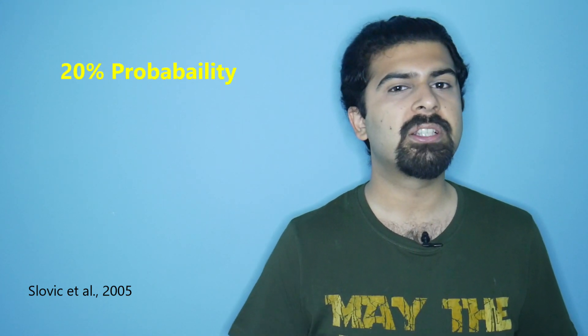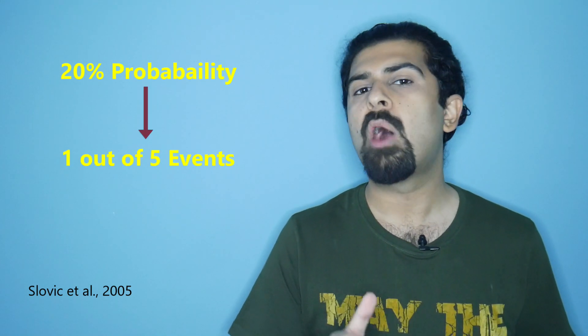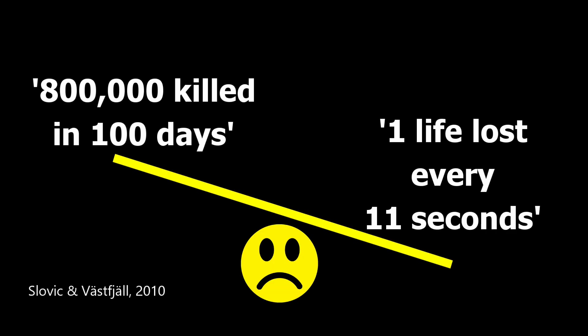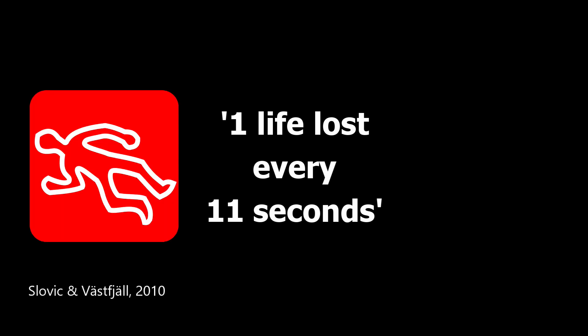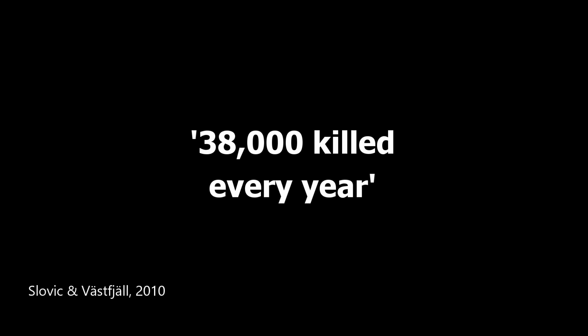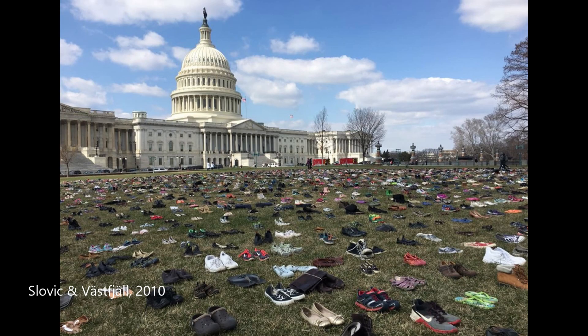Secondly, for quantitative information, frequency formats are more effect-laden than percentages. For example, to increase the effective meaning of 20% chance of death, it can be reframed as 1 out of 5 people are likely to die. Now, effective impact can be increased further by using imagery or individualized narrative. For example, 800,000 killed in the last 100 days can be broken down and reframed as one life lost every 11 seconds. Both the one life lost and the near-time horizon of every 11 seconds are more effective. Another example, in a rally to get the US Congress to do something about 38,000 deaths a year from handguns, the organizers piled 38,000 pairs of shoes in a mound in front of the Capitol.